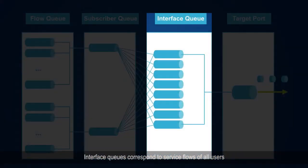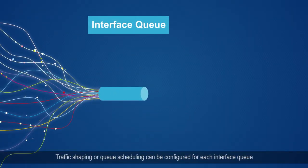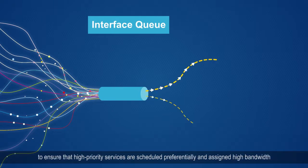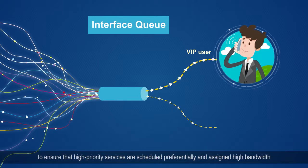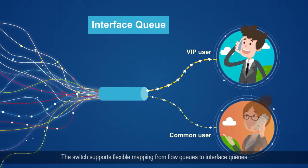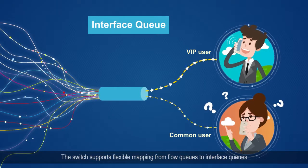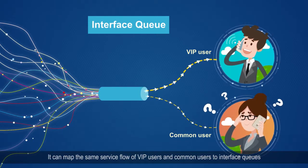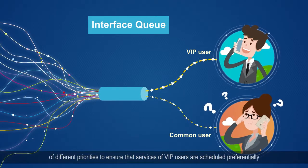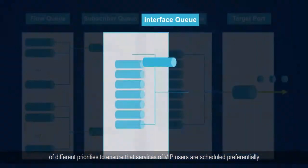Interface queues correspond to service flows of all users. Traffic shaping or queue scheduling can be configured for each interface queue to ensure that high-priority services are scheduled preferentially and assigned high bandwidth. The switch supports flexible mapping from flow queues to interface queues, mapping the same service flow of VIP users and common users to interface queues of different priorities to ensure VIP services are scheduled preferentially.